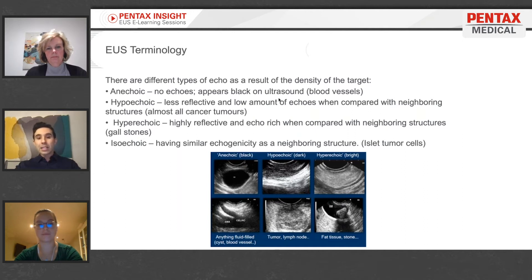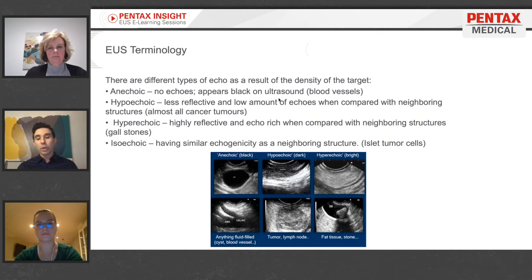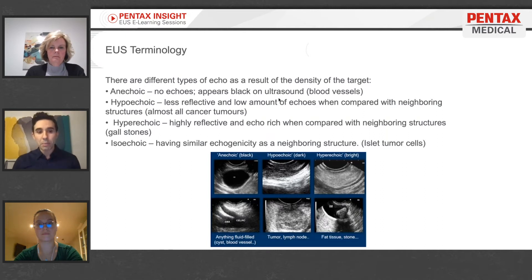Hypoechoic means less reflective, or a reduced amount of echoes coming back compared to neighboring structures — we always have a means of comparison. If we use the pancreas as an example and refer to something as hypoechoic, it's hypoechoic relative to the remainder of the pancreatic tissue. This is relevant because most malignancies tend to be hypoechoic relative to the adjacent normal tissue, with a few exceptions.